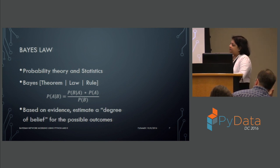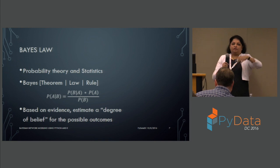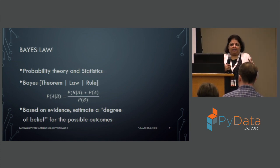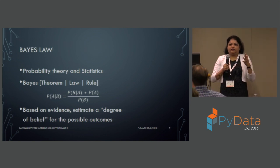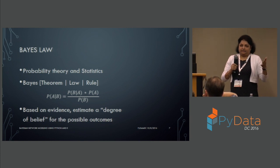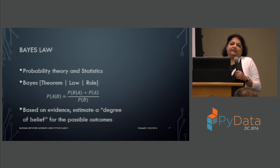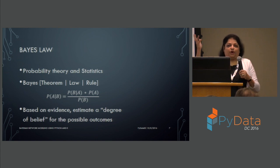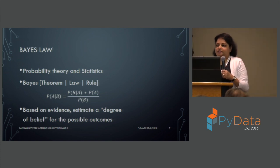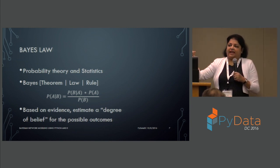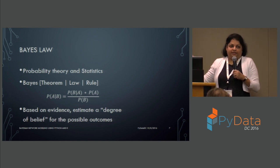Based on evidence — the data that you have — you're trying to come up with a degree of belief for the possible outcomes, which are the different ways the problem can occur. Going back to my galaxy example, the outcomes could be: is the distance of the galaxy at redshift 0.1, 0.2, or 0.3? After applying Bayesian networks, I get an understanding of how much I can believe from the data whether the distance is 0.1, 0.2, or 0.3 — I get specific numbers for that.